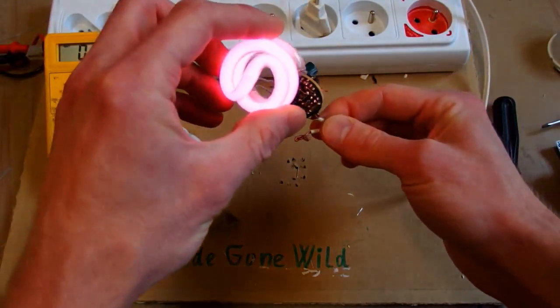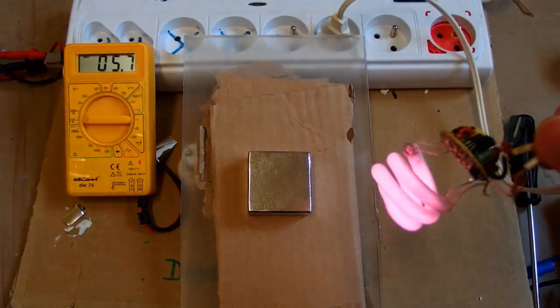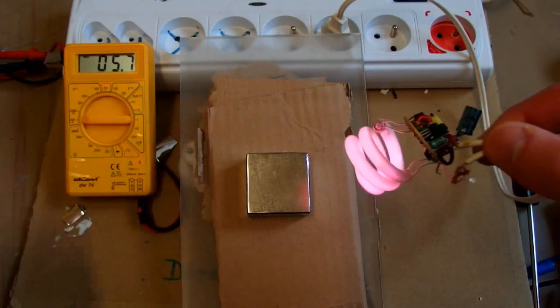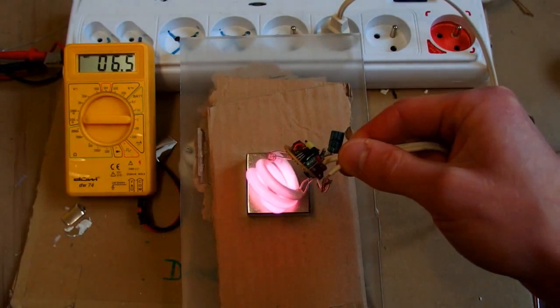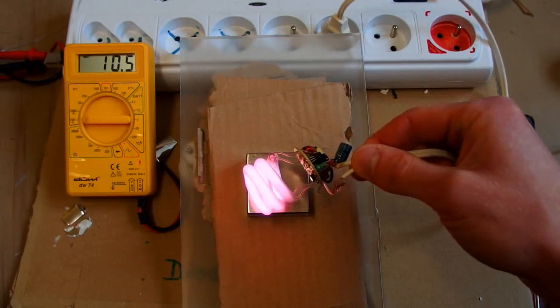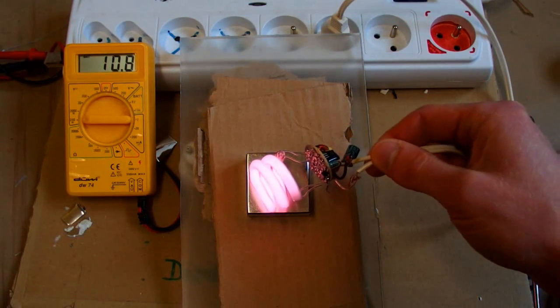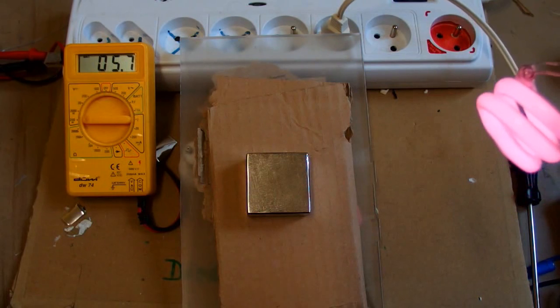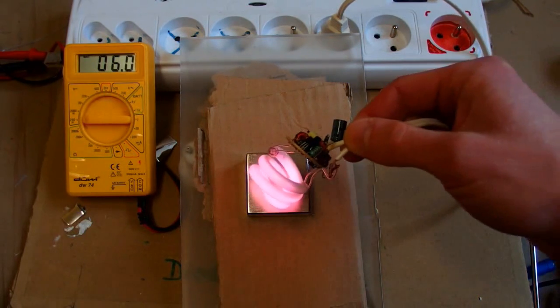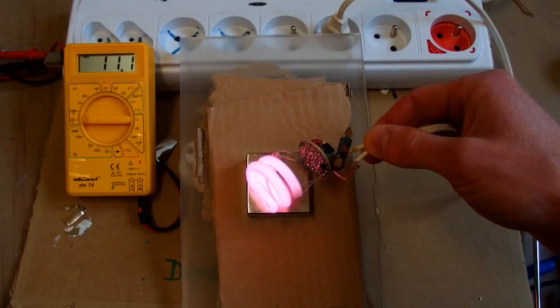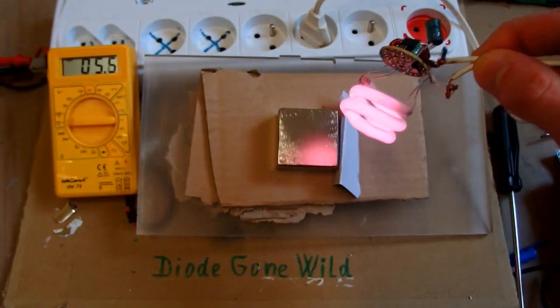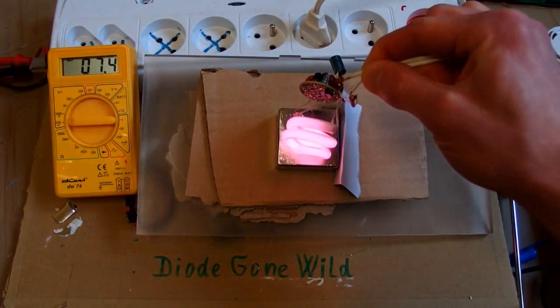And I have also noticed one strange phenomenon. When I put the tube to my neodymium magnet, the power goes up. The magnet can double the power. Normally it's 5.7, and now it's 10, 11 watts. Oh shit. So this is Diode Gone Wild and see you in my next videos.